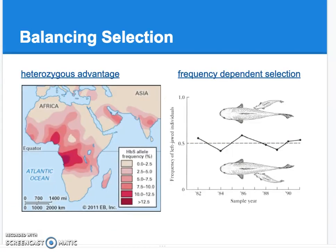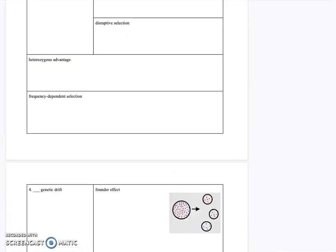Now I'm going to talk about balancing selection. We have two examples in your notes. I'm going to try a different format where I tell you where to go in your notes and you can take notes on what you think is important. The two instances of balancing selection are heterozygous advantage and frequency dependent selection.